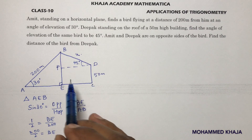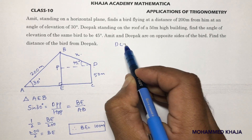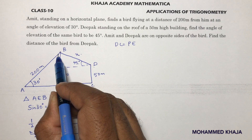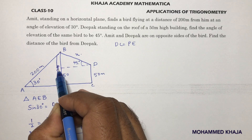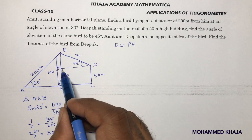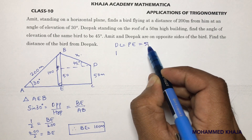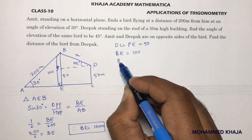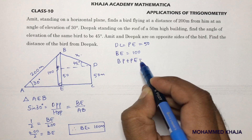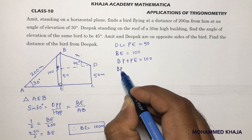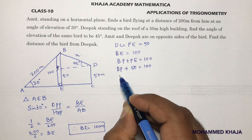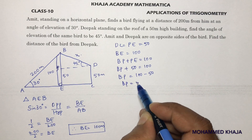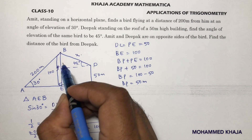So the total height BE is 100 meters. Now DC equals PE because they are horizontal distances, so PE is 50 meters. Since BE equals BP plus PE, and PE is 50, BP equals 100 minus 50. Therefore BP equals 50 meters.